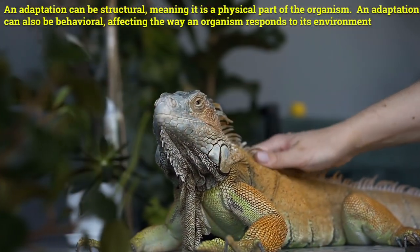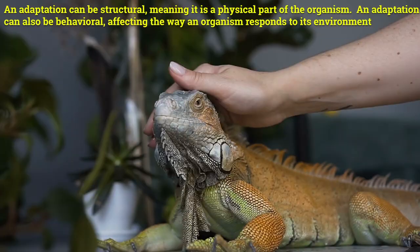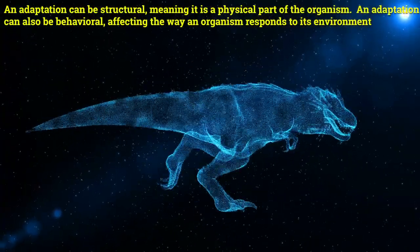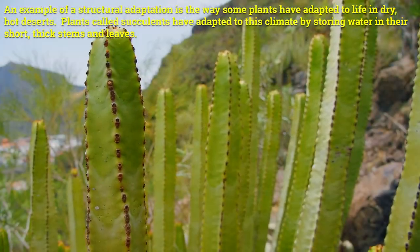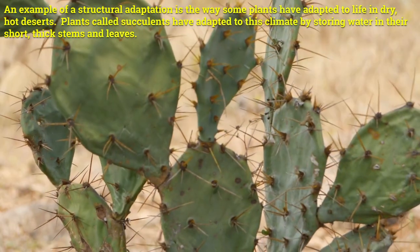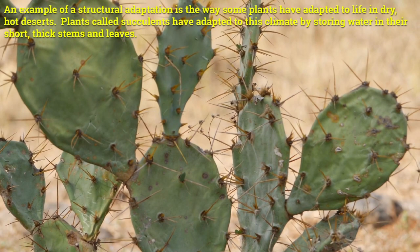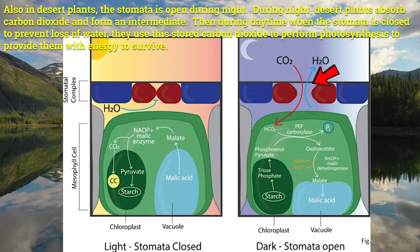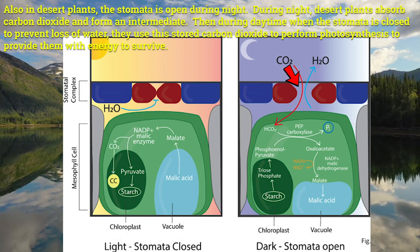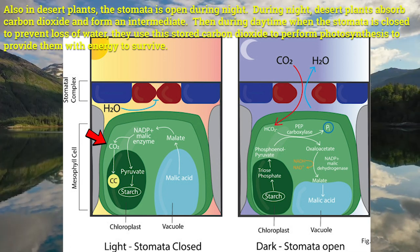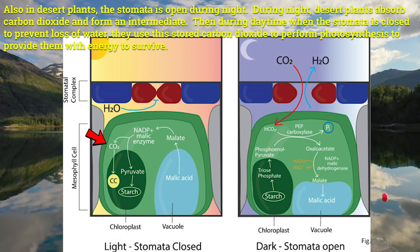An adaptation can be structural, meaning it is a physical part of the organism. An adaptation can also be behavioral, affecting the way an organism responds to its environment. An example of a structural adaptation is the way some plants have adapted to life in dry, hot deserts. Plants called succulents have adapted to this climate by storing water in their short, thick stems and leaves. Also, in desert plants, the stomata is open during night. Desert plants absorb carbon dioxide and form an intermediate. Then, during daytime when the stomata is closed to prevent loss of water, they use the stored carbon dioxide to perform photosynthesis to provide them with energy to survive.